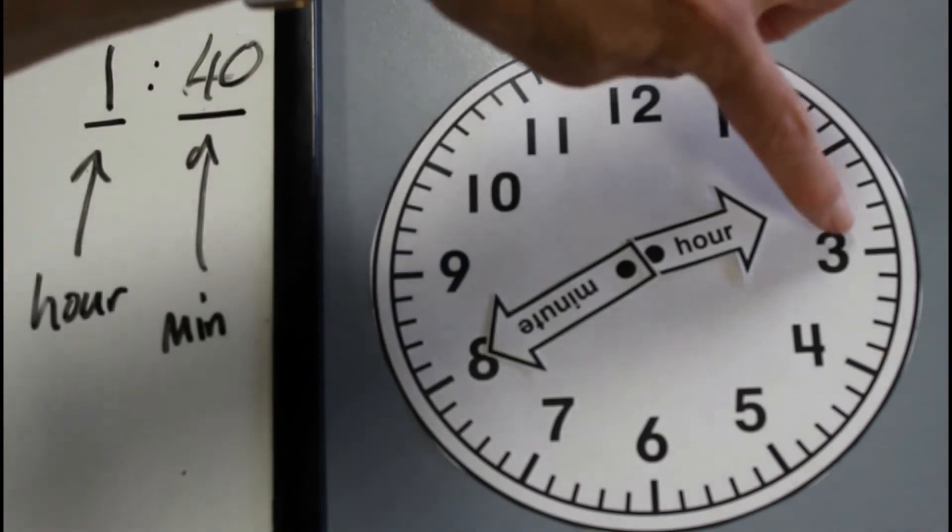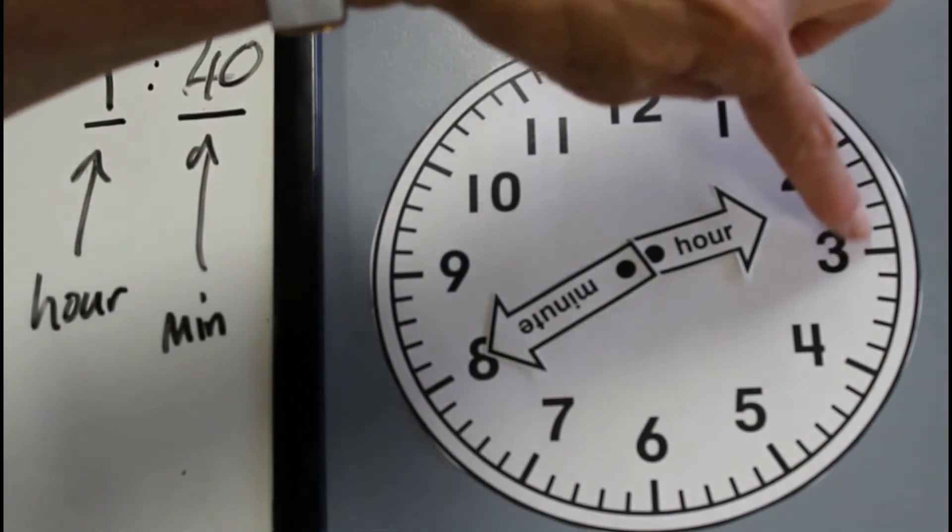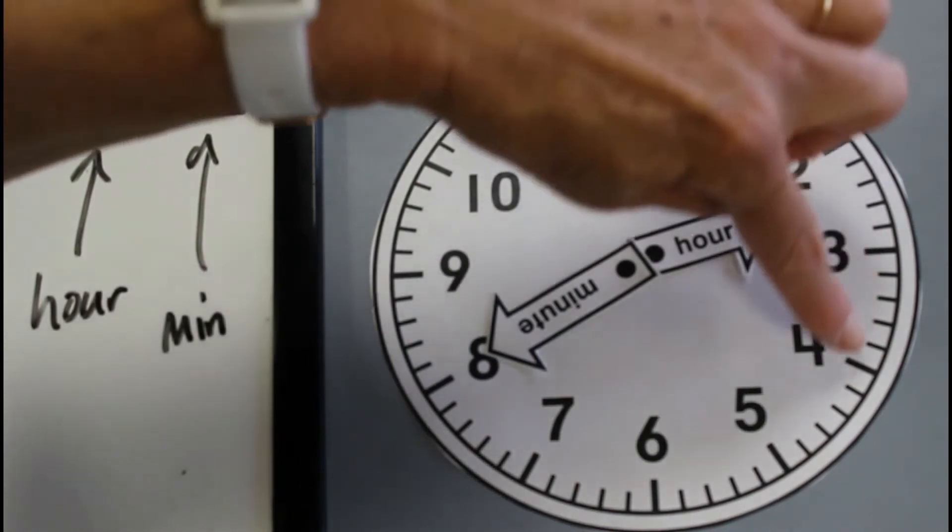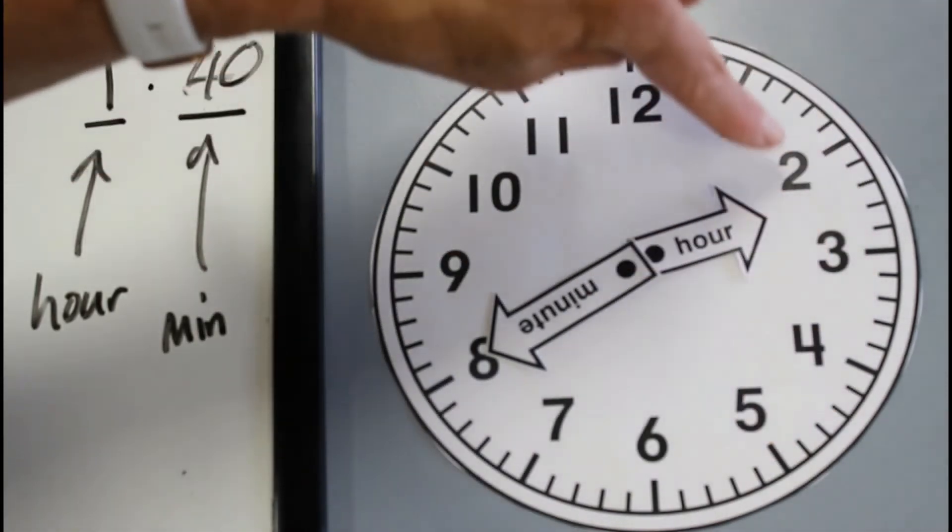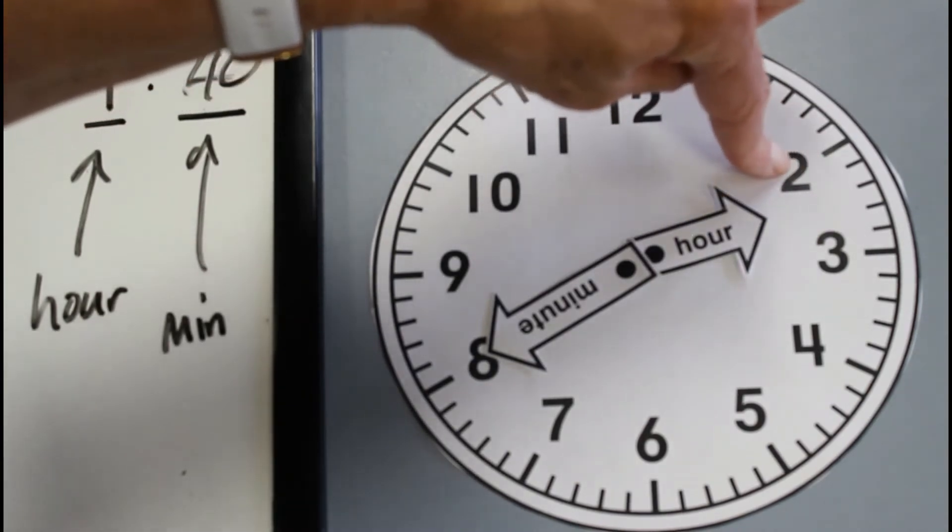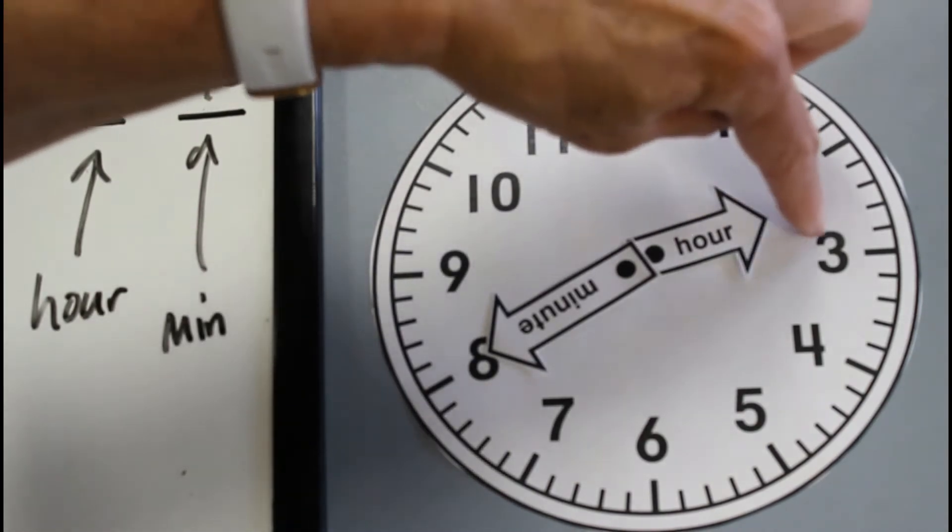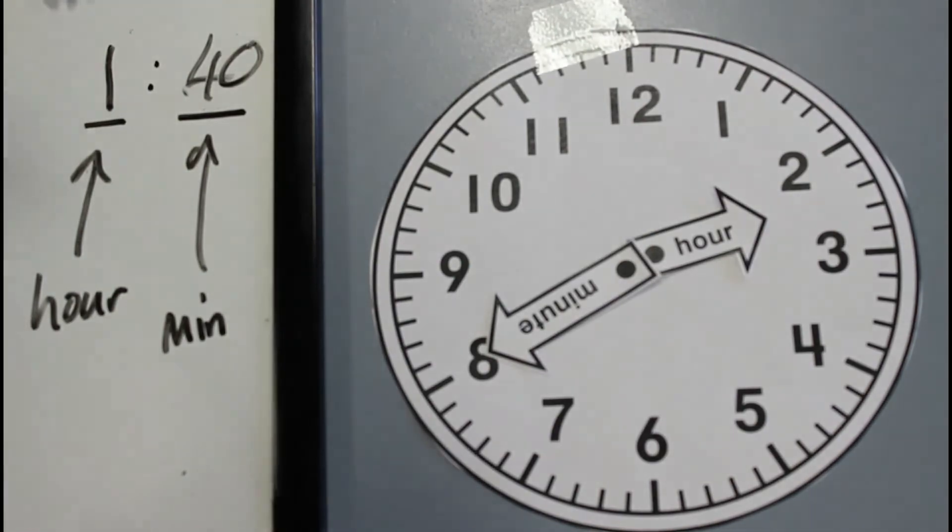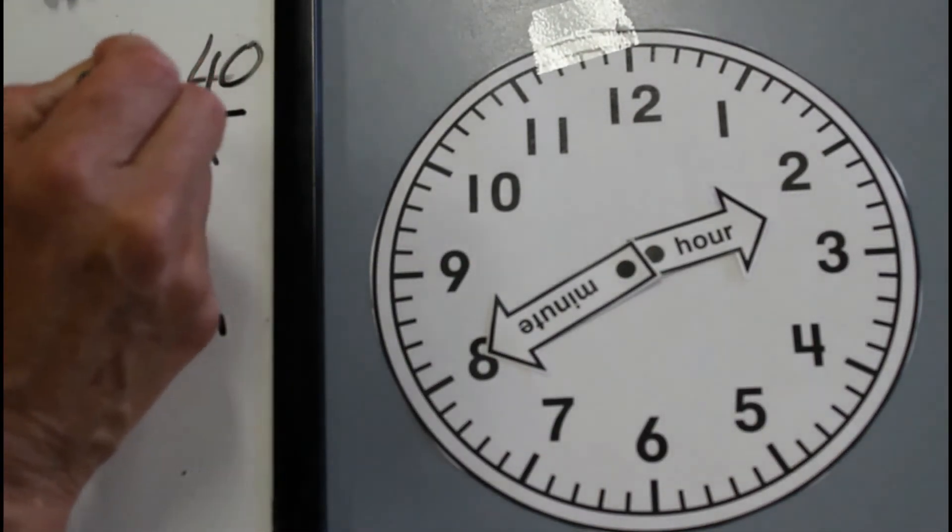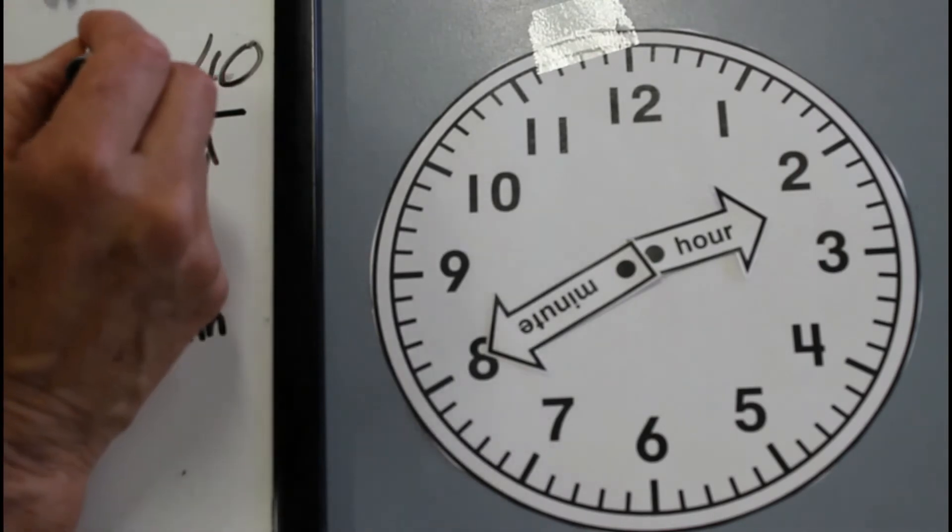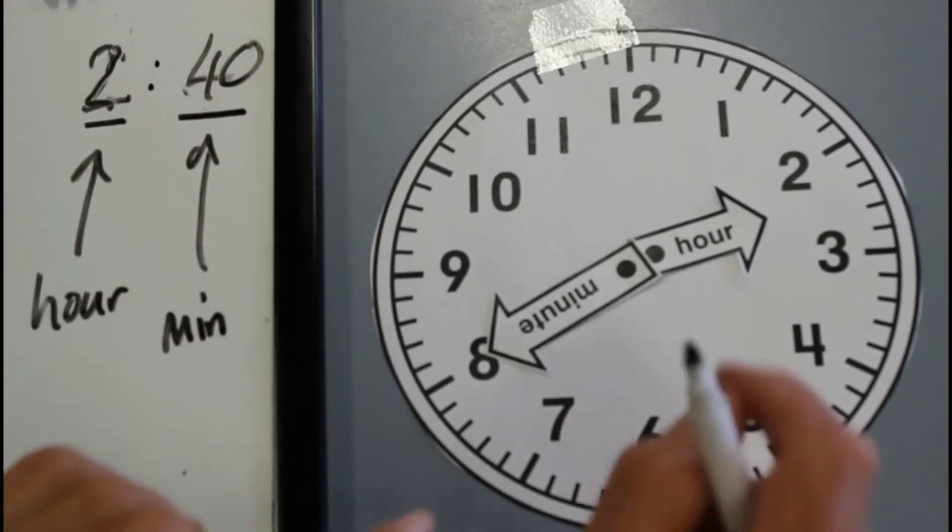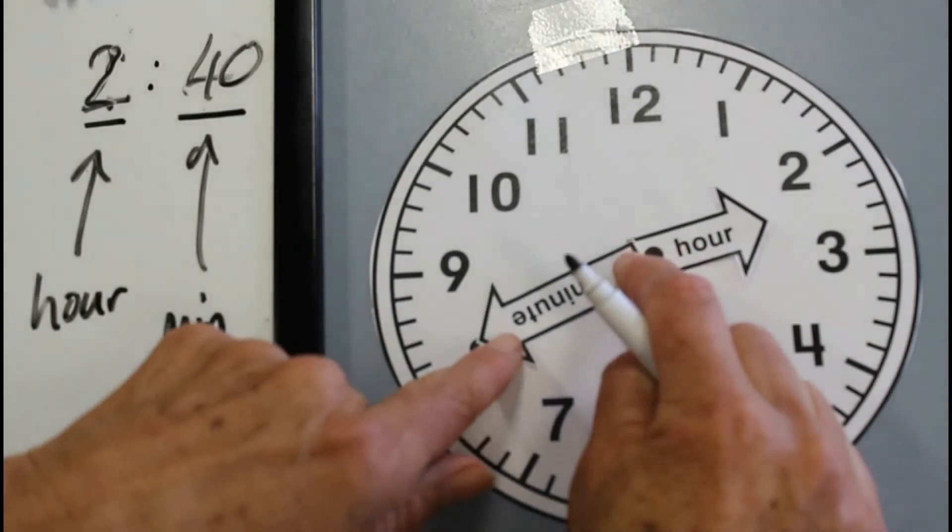It's now between the two and the three, so two owns this space. Up until when it gets to three, then three will own this space, and four will own this space. This space is owned by the two. So anything pointing between the two and the three is now the two. So I'm going to rub this out, and I'm going to write two. That's two forty, and that's what that clock says.